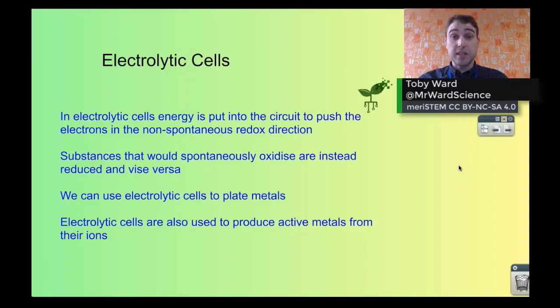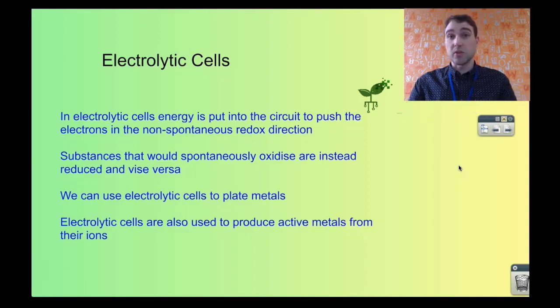In electrolytic cells energy is used to force electrons in the opposite direction they would normally go, in the non-spontaneous redox direction. What that means is that things that would normally oxidize are instead reduced and things that are normally reduced are then oxidized. So we're forcing electrons in the opposite direction.